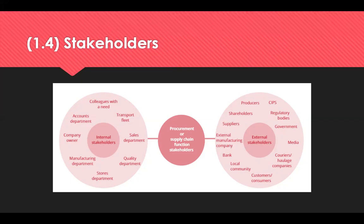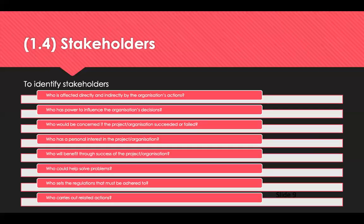To differentiate stakeholders in your supply chain, think about the people, groups and organisations affected by your activities — both internal and external. To identify who they might be, ask yourself: who is directly or indirectly affected by my actions? Who has the power to influence my decisions? Who is concerned if the project is a success or a failure? Who has a personal interest? Who will benefit? Who could help solve problems? Who sets the regulations we must adhere to? And who carries out the related actions?